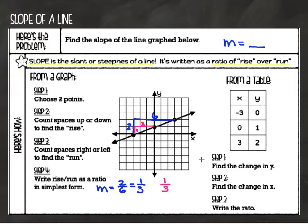Sometimes they'll give you ordered pairs in a table and ask you to find the slope that way. These three ordered pairs are the same three points from this graph: negative three, zero; zero, one; and positive three, positive two. I've put those in the table, and now I'm going to show you how to find the slope from a table.